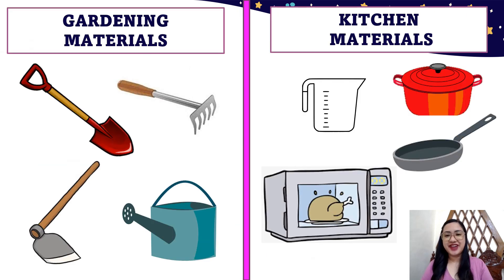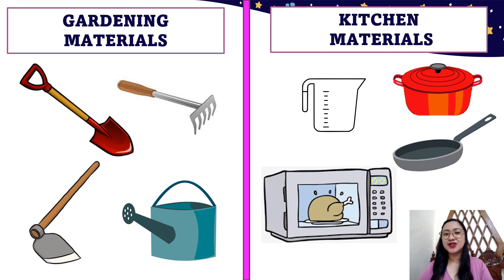Here are the correct answers. The shovel, rake, hoe, and water sprinkler belong together because they are all connected to gardening. We can label them as gardening materials. Meanwhile, the measuring cup, casserole, oven, and frying pan belong together because they are all connected to cooking. We can label them as kitchen materials.